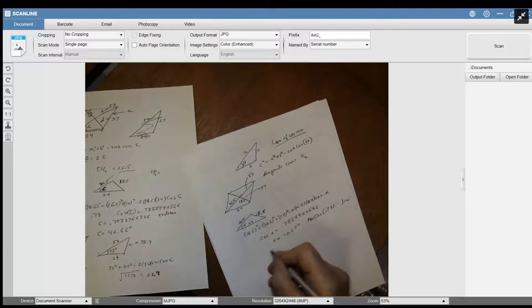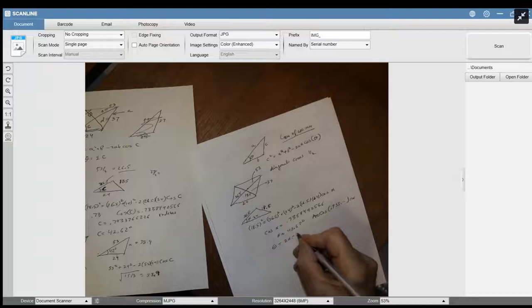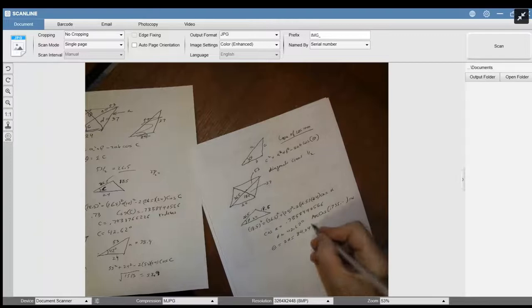so alpha is 42 degrees. So your theta is double that, which is 85.24 degrees approximately. So that's the answer for theta.